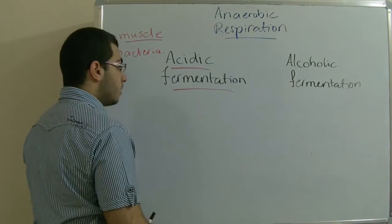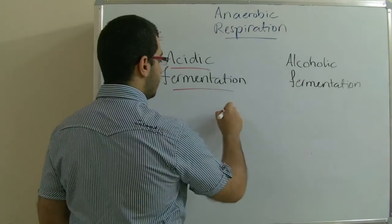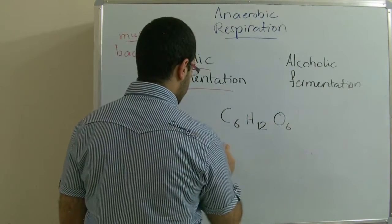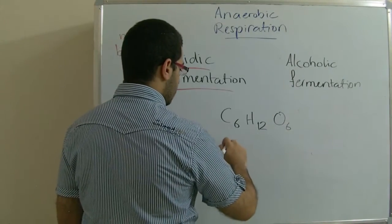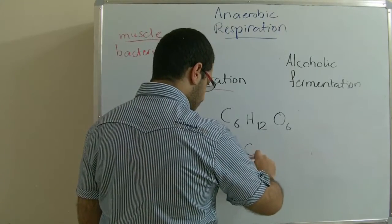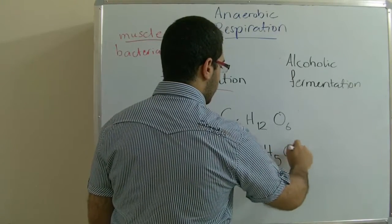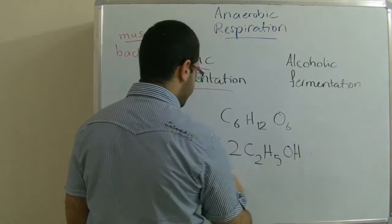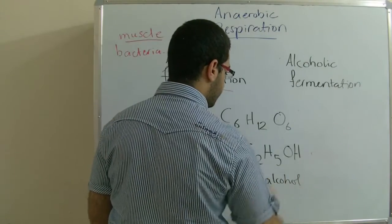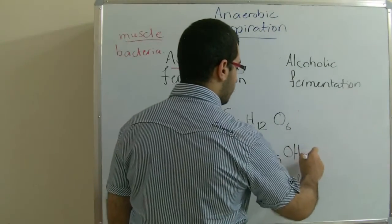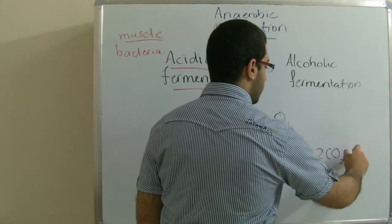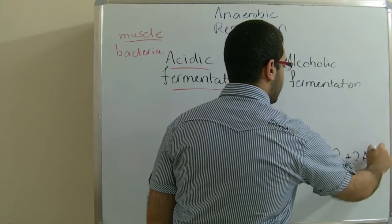Where the glucose molecule changes into two C2H5OH, two ethyl alcohol molecules. Two carbon dioxide molecules are produced and two ATP molecules.